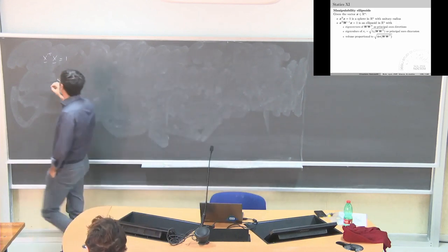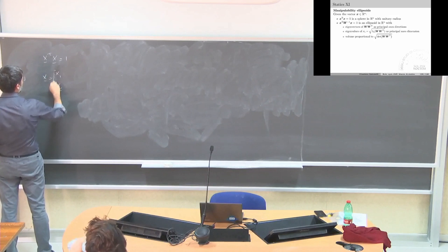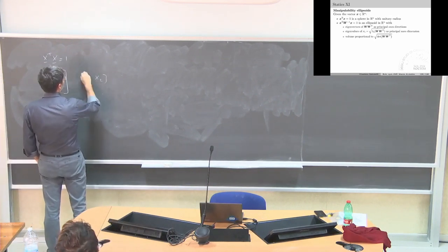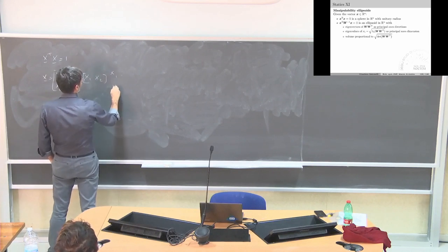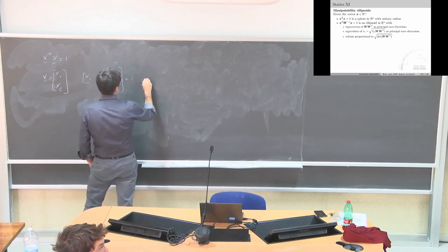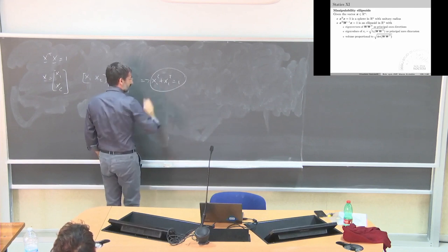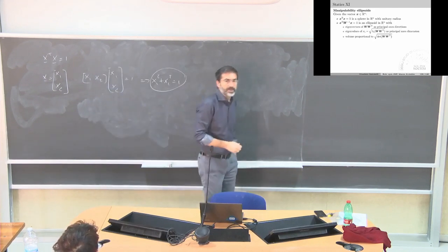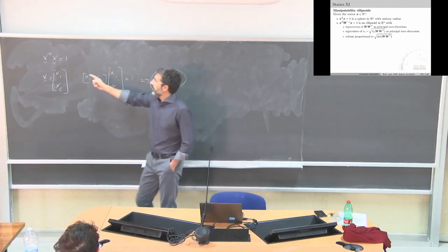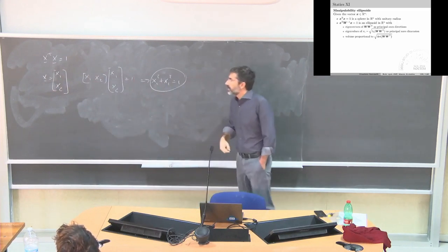Let us just see for two elements. This is equivalent to [x1, x2] multiplied by [x1, x2] transpose, which gives x1 squared plus x2 squared equals 1. You should have studied at high school that this is a sphere — this is simply the simplest representation of the sphere.